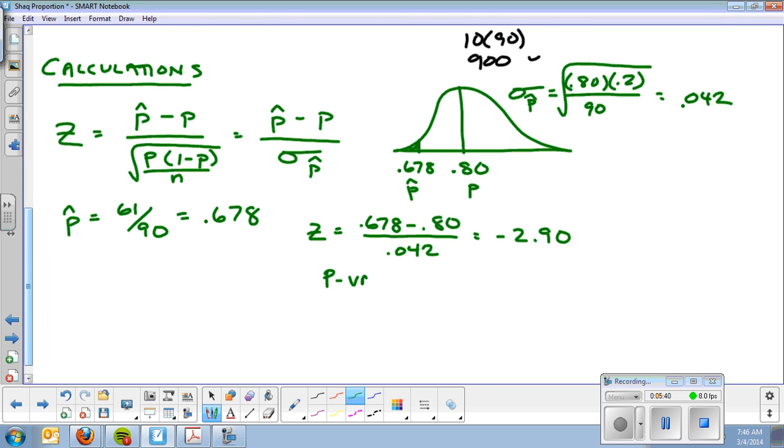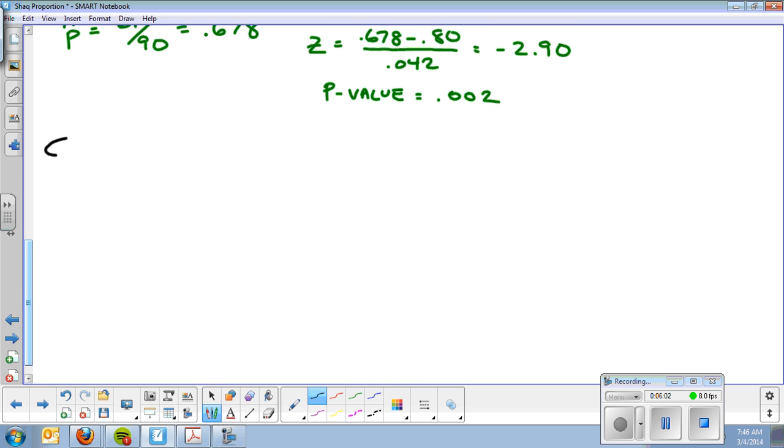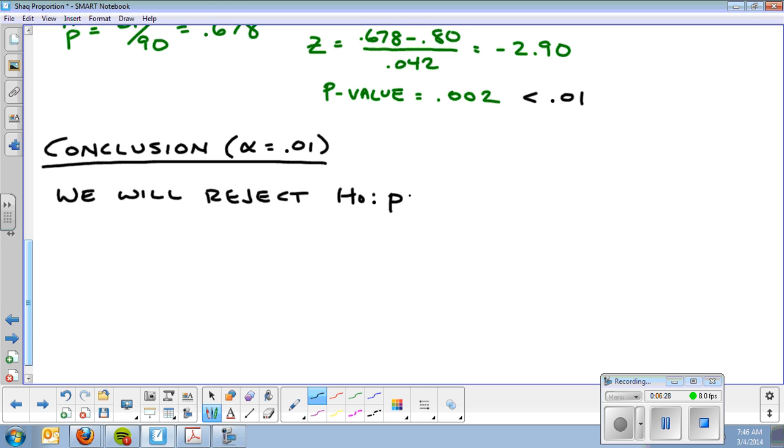And when I use my calculator, I get a P-value of .002. And remember, I'm using normal CDF to get that P-value. I don't have to double it because it's not two-tailed. That's a really small P-value. We're using alpha equals .01. So right off the bat, we can go to our conclusion at alpha equals .01. And say, obviously, the P-value is way less than alpha. Well, not way less, but less. So we will reject the null hypothesis, P equals .80, at alpha equals .01 significance level.